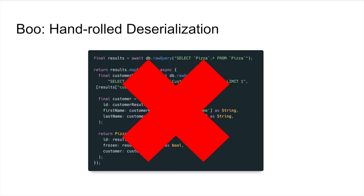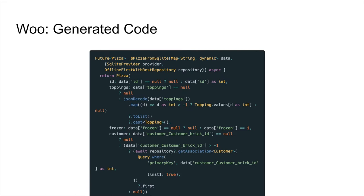Boo — this is bad, this isn't what we want to do as developers. We can generate all this code. BRIC out of the box generates adapters to and from providers. In this case, this is the pizza model coming in from SQLite — it handles the toppings coming in as integers, looks up their enums and assigns them as toppings. If we want to find the customer association, we can look up the primary key associated on this pizza row.